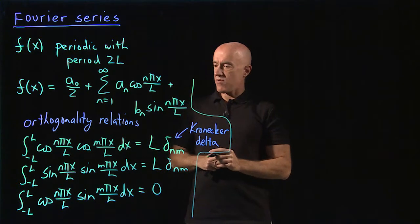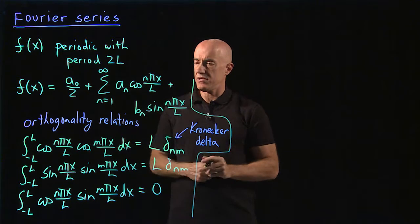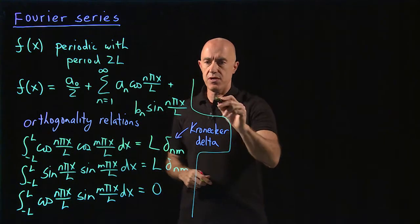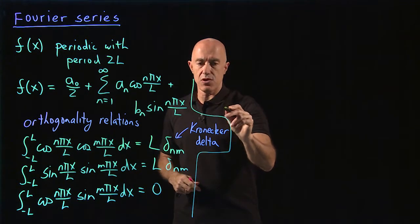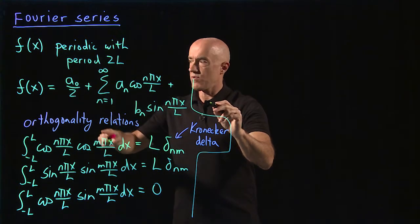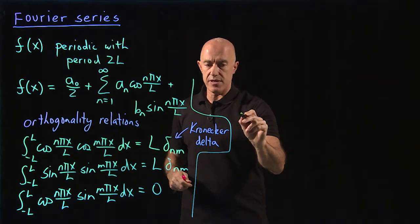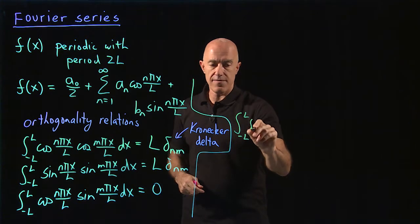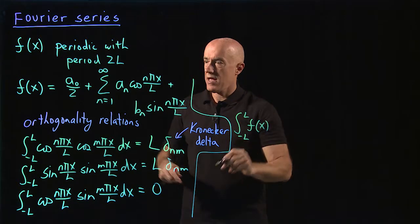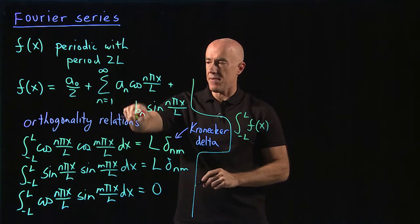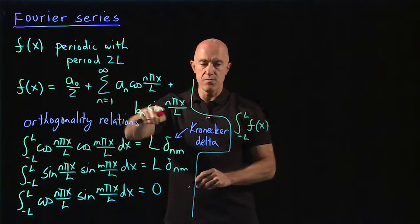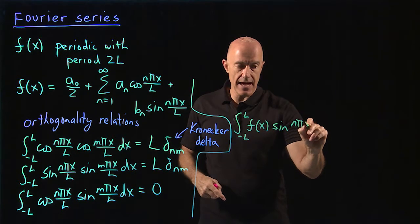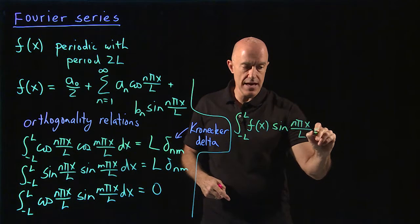Let's say we wanted to find the b coefficients. To find the b coefficients, what we would do is we would integrate the left-hand side. So we would take the integral from minus l to l of f of x. And we want to find b sub n. So we would multiply by sine n pi x over l and integrate.